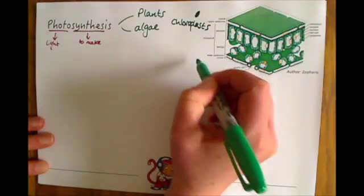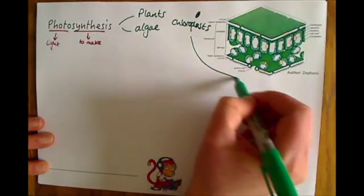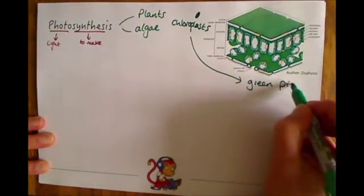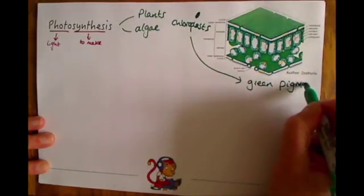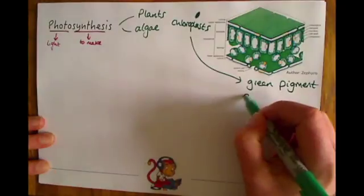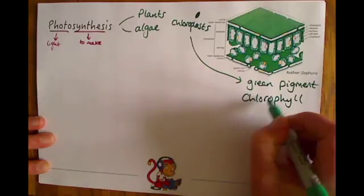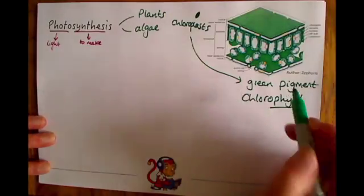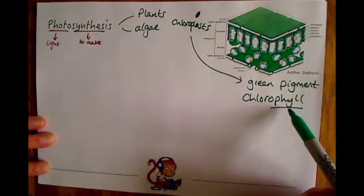Inside these chloroplasts there is a green pigment called chlorophyll. That's why we draw them as green, and that's why a lot of foliage looks green, because of this green pigment called chlorophyll. If you remember 'filled' in, that might help you remember that the chloroplasts are filled with chlorophyll.